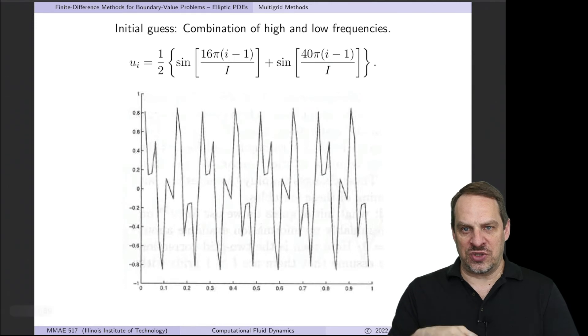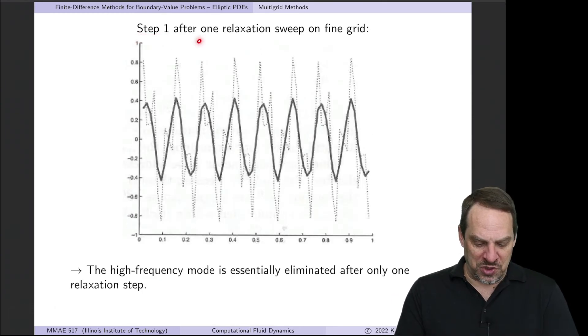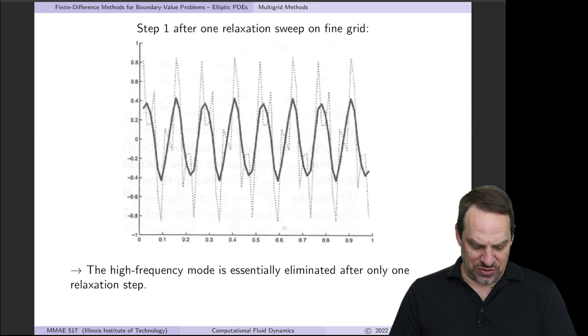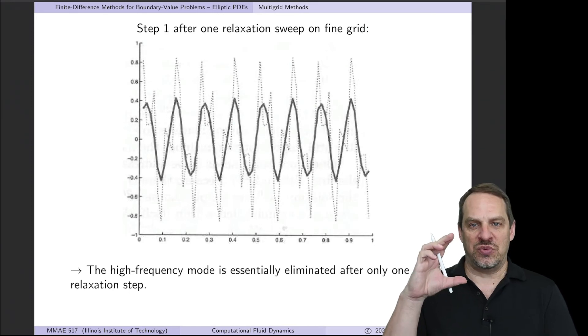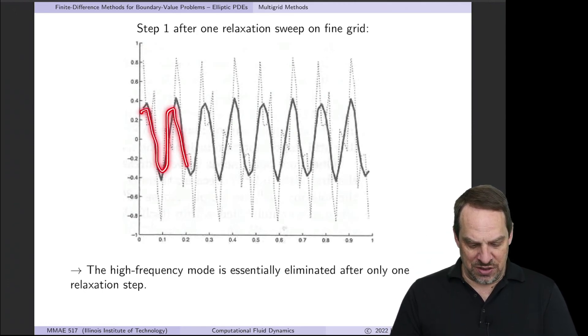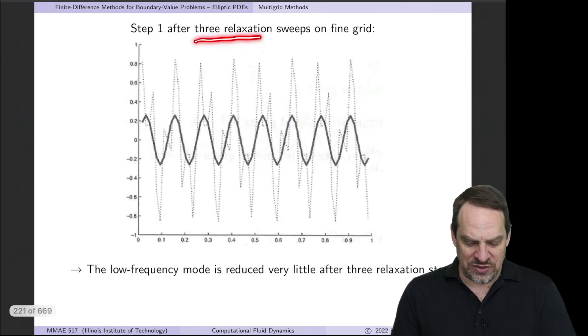So you see the basic oscillatory behavior with k=16 and then a higher frequency mode superimposed on top of that corresponding to the k=40. And we want to see how the multi-grid method acts on these two different frequencies. In all the subsequent figures, I'll superimpose this initial guess on the solution at that particular stage so you can see how much work has been done or not done. So step one, after only one relaxation sweep on the fine grid, you can see how much the error has been reduced. Just one sweep through that one-dimensional grid.